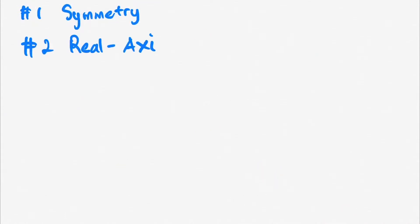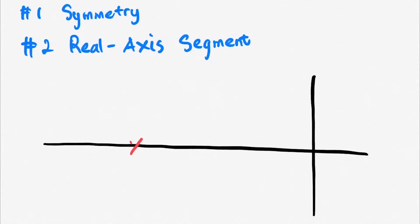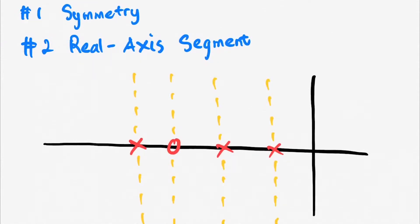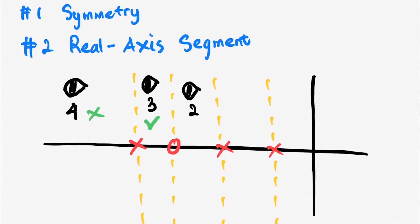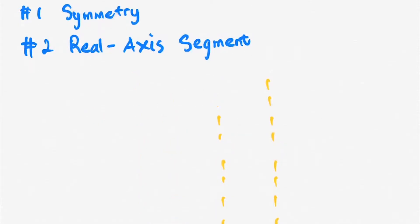The second criterion is the real axis segment. The areas of the root locus on the left-hand side segment of the real axis are numbered odd for finite open-loop poles and the finite open-loop zeros.